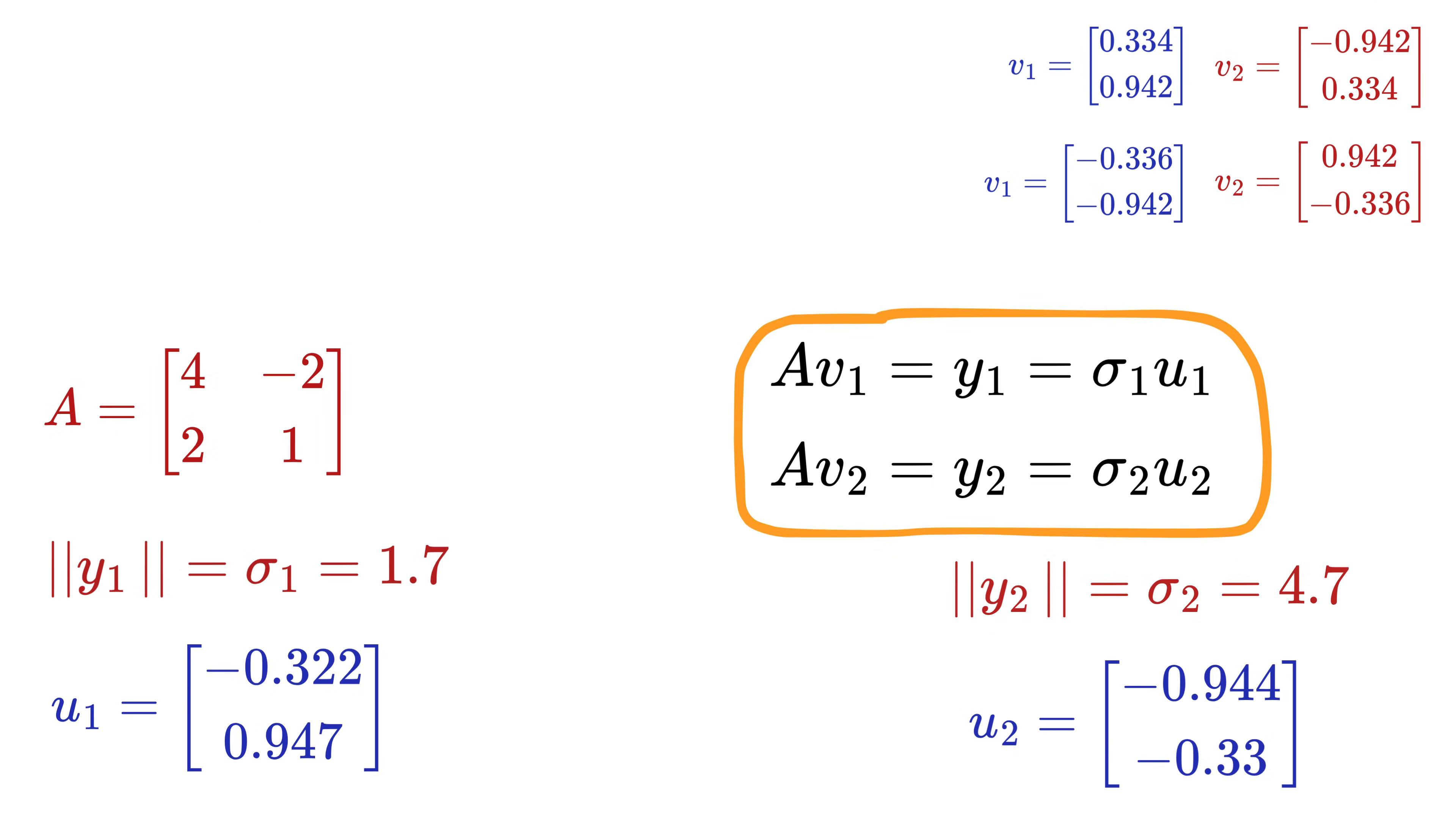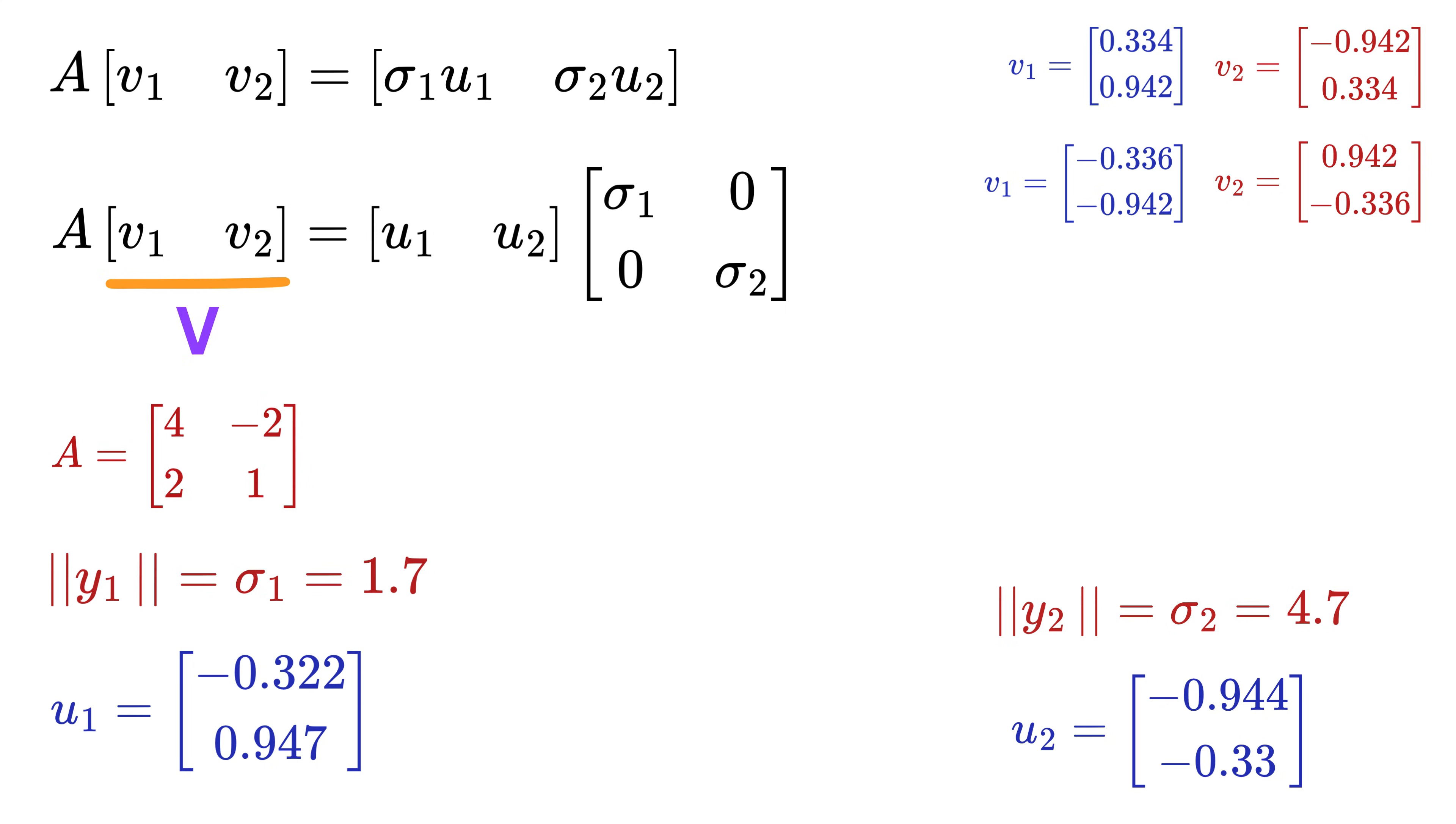Okay, great. Now we can rewrite this into matrix form like this, and then again, split this part like this. So, if we call this as matrix V, this as sigma matrix, and this as matrix U, then you can see that AV equals U times sigma.